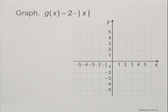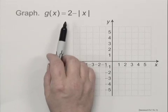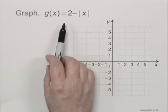Graph g(x) = 2 - |x|. We're going to find some function values, plot the corresponding points, and draw the curve.